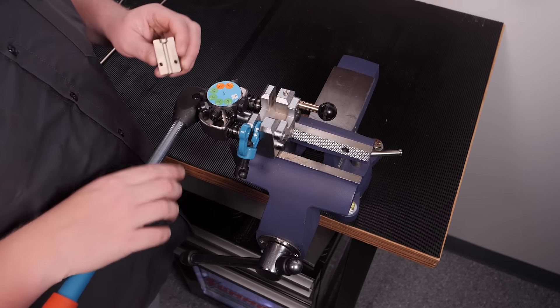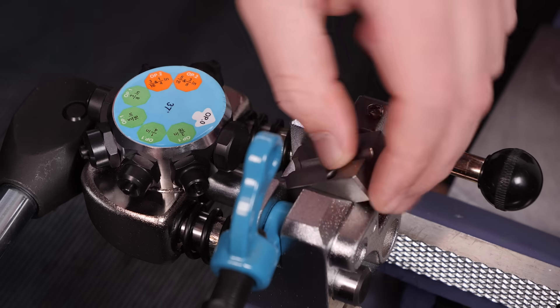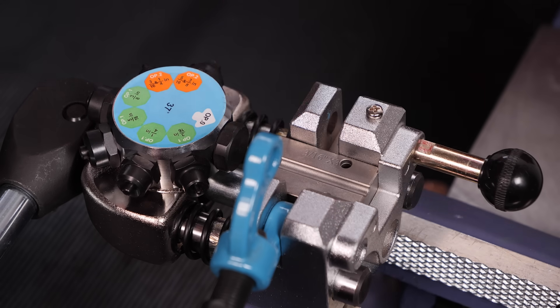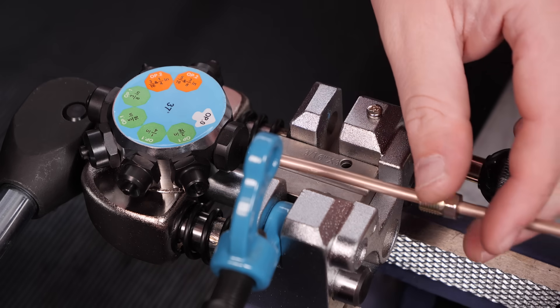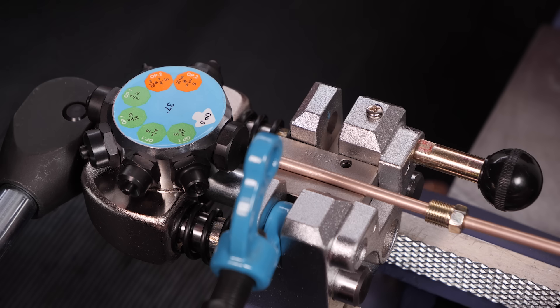Insert what die you're using. So we're going to flare a 3/16 line here with a single flare. It's also very important that you put your fitting on.